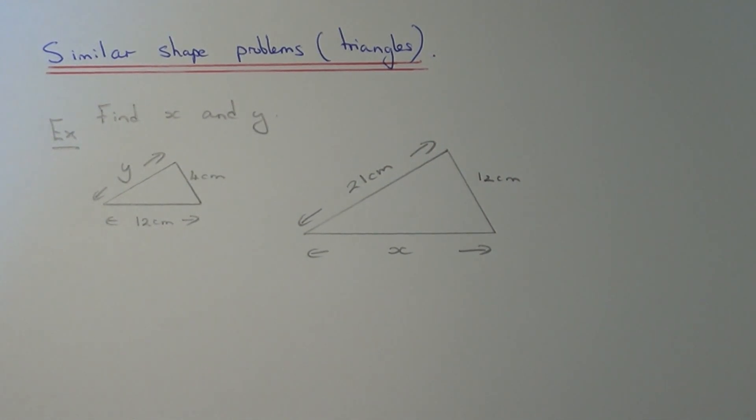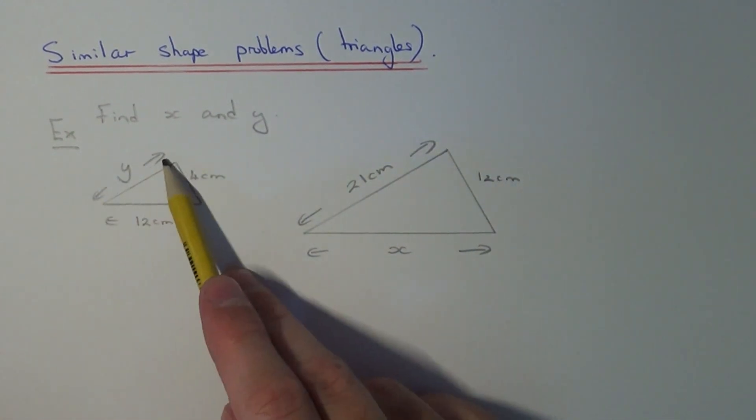So let's have a look at a little example here. We have two similar triangles and we need to work out side x and side length y.